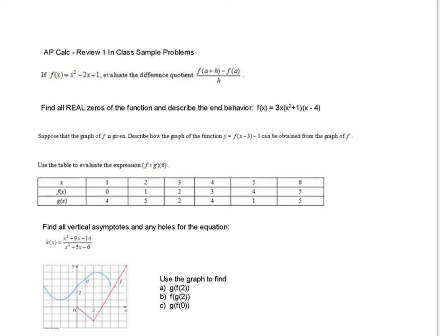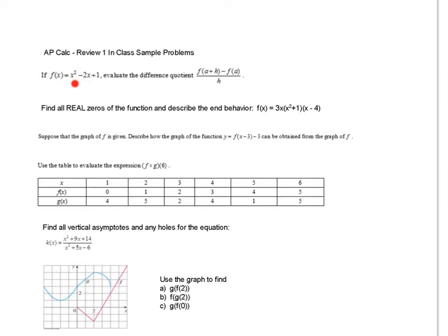Okay, so this is the Chapter 1 in-class review. The first problem is to find the difference quotient. The whole idea is to take a plus h and put it in for the x's — that becomes part of the equation — and then a goes in the second part. I need a little more space, so I'm going to do it on another slide.